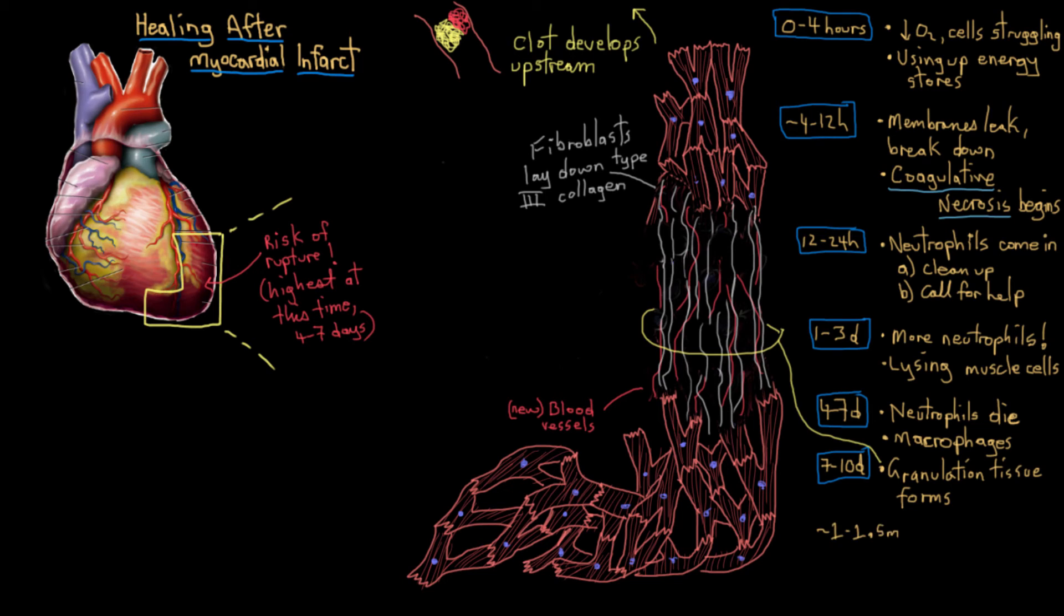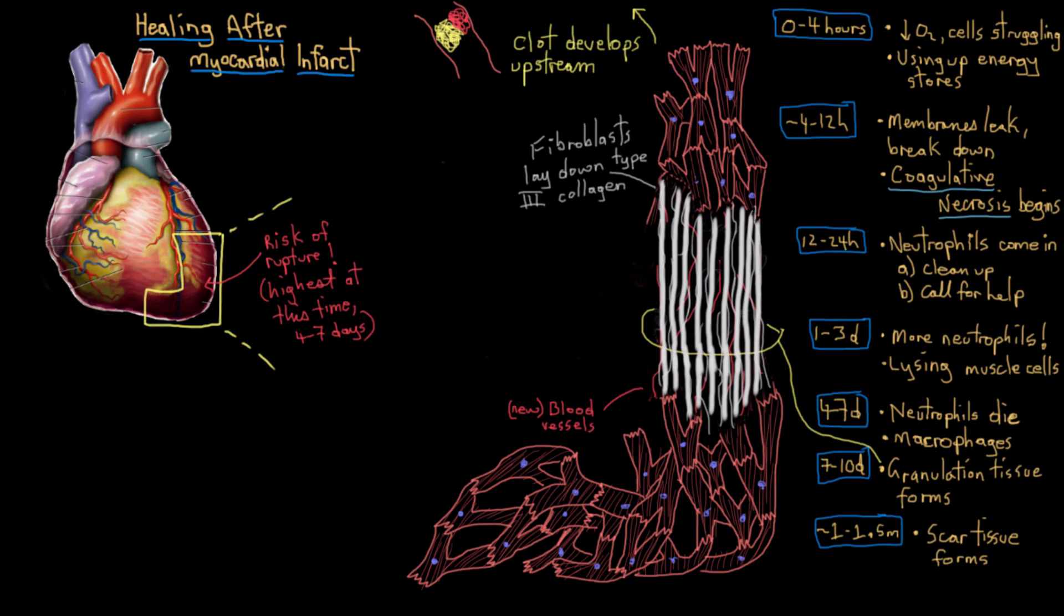What's next? Well after about a month, month and a half, the type III collagen in the granulation tissue will be completely replaced by a way stronger type of collagen called type I collagen. And that's actually what we know as scar tissue. So if you have a scar anywhere, you know what scar tissue is. It's the same thing here in the heart. So there's two little points about this scar tissue.